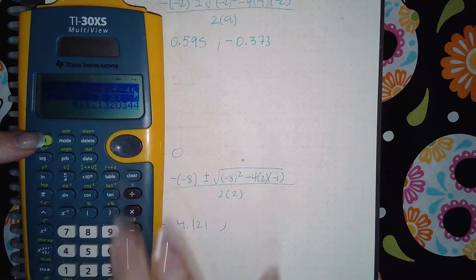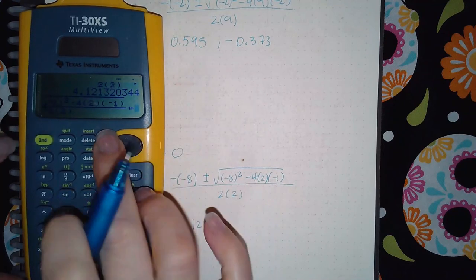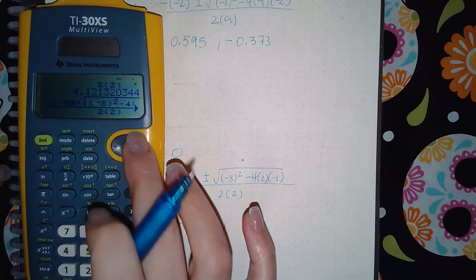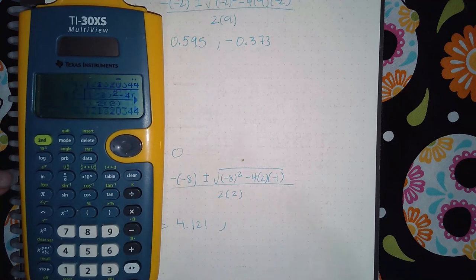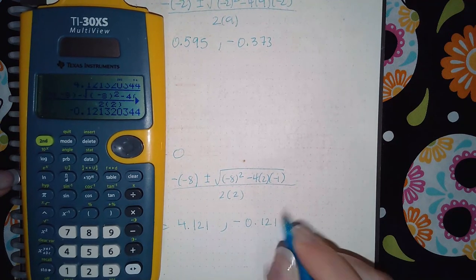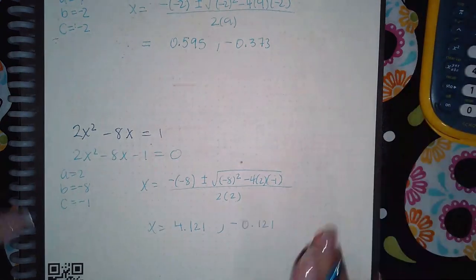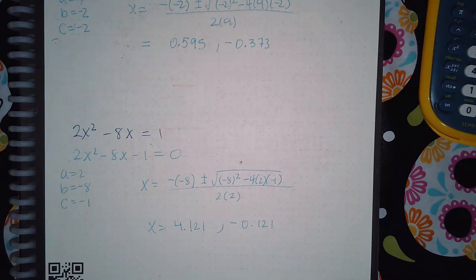Then I'm going to go back and copy, go to the front, and put a minus sign and enter. I get negative 0.121. And so these are the two decimal answers there.